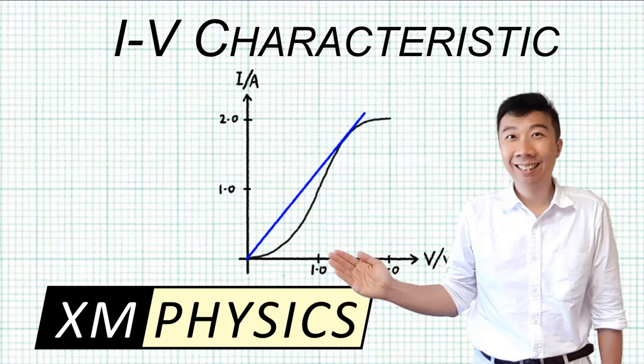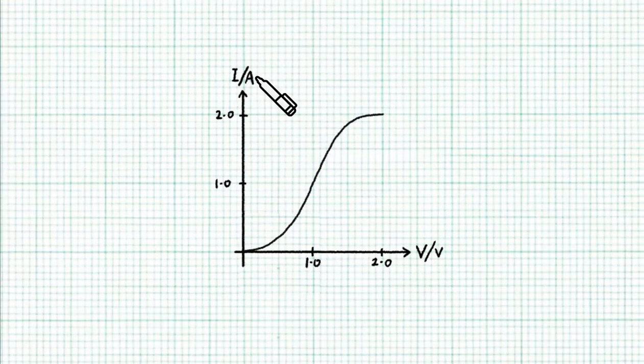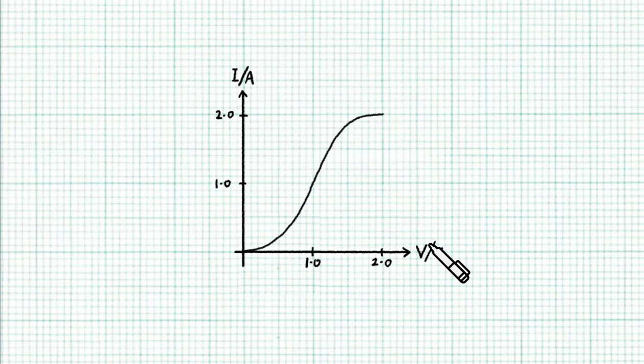Hello everyone, this is XMPhysics. If you are given the IV characteristic graph of a mysterious component and you are asked to calculate the resistance of these components when it's operated at 1.0 volt, what are you going to do?